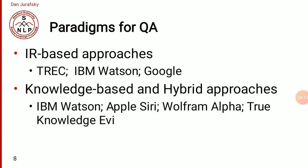Question answering systems generally have two types of paradigms. One is the IR-based approach — for example, TREC, IBM Watson, and Google — which is based on information retrieval. The other is the knowledge-based and hybrid approach. Knowledge-based means there is a corpus or set of data from which we retrieve answers. Examples include IBM Watson, Apple Siri, Wolfram Alpha, True Knowledge, and EBI. The hybrid approach combines both IR and knowledge-based systems, with IBM Watson being the best example.